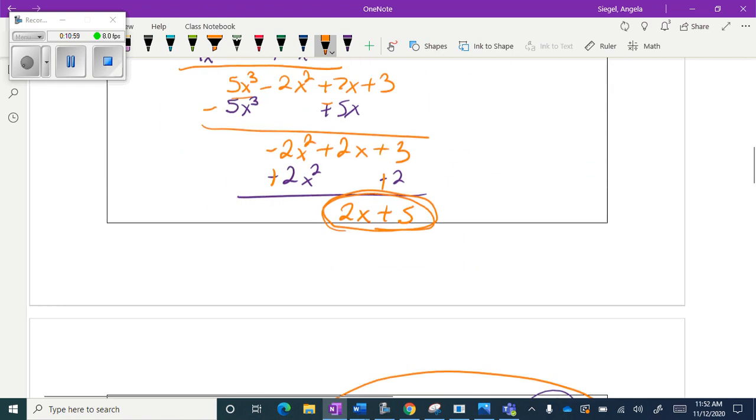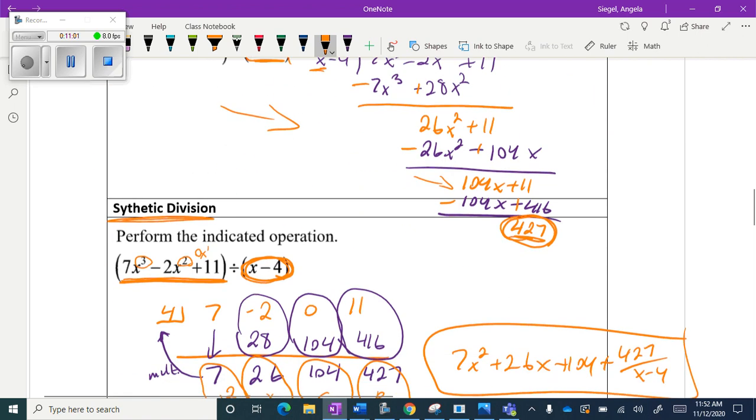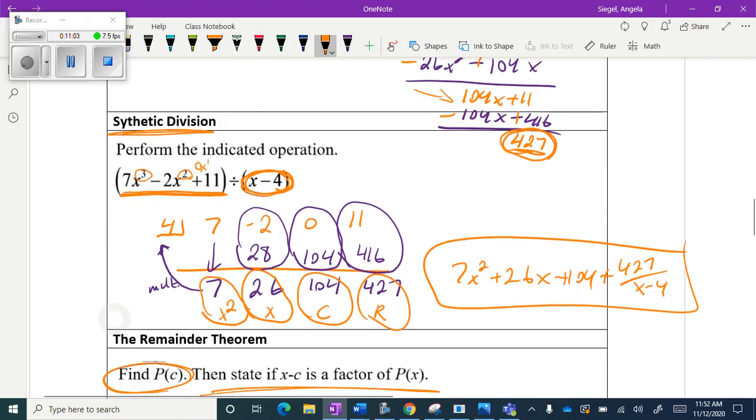So let's apply that to synthetic division. So we're going to go down here. And if our remainder is 0, then we can say this is a factor. So if I ask you, is x minus 4 a factor of this? You would say, no way, because you have a remainder of 427. So it's not a factor. The same concept that we've been dealing with since grade school. It's just our problems look a lot more different.